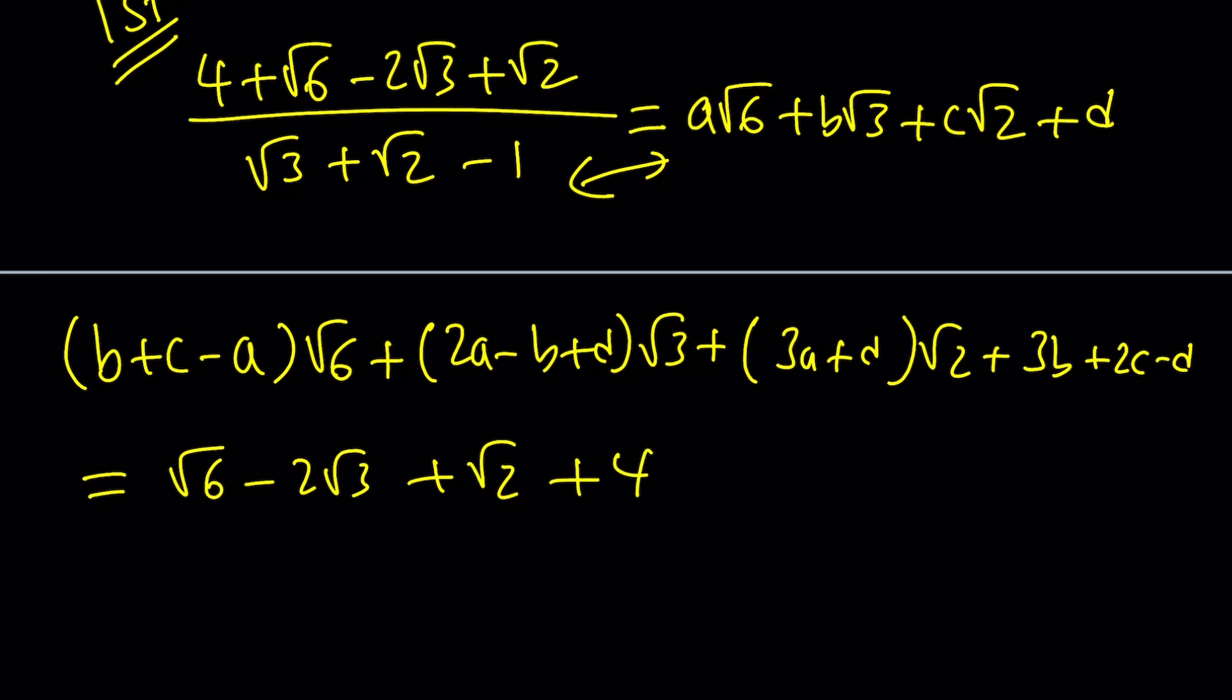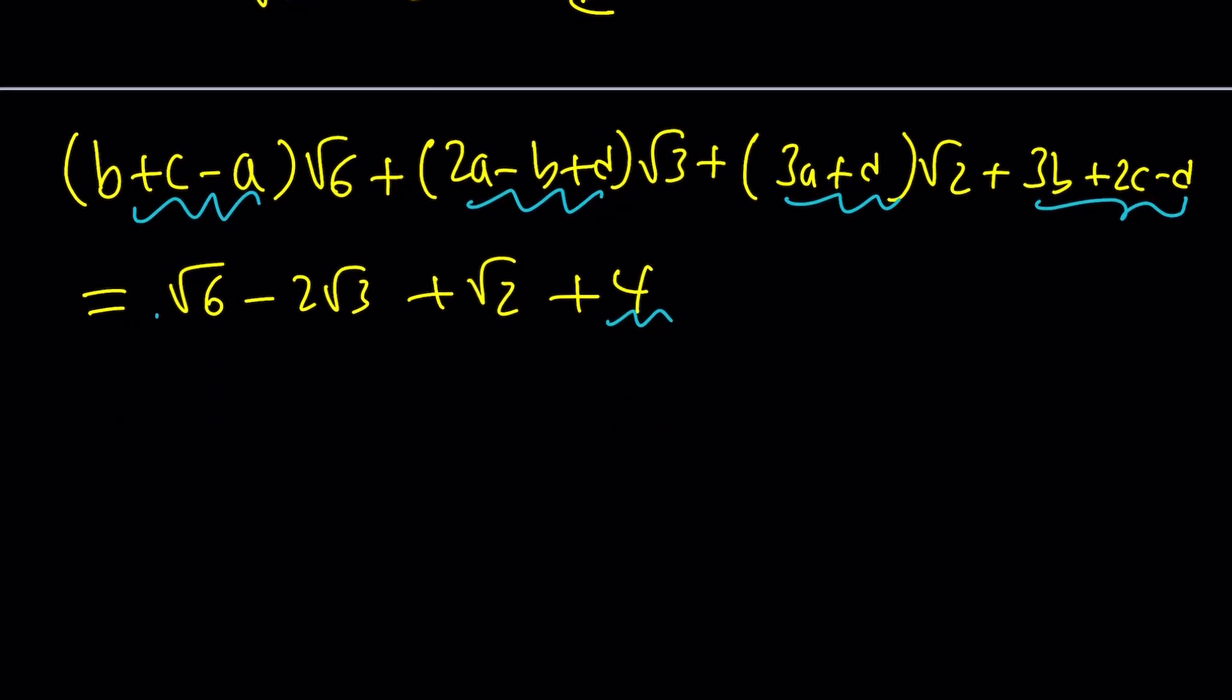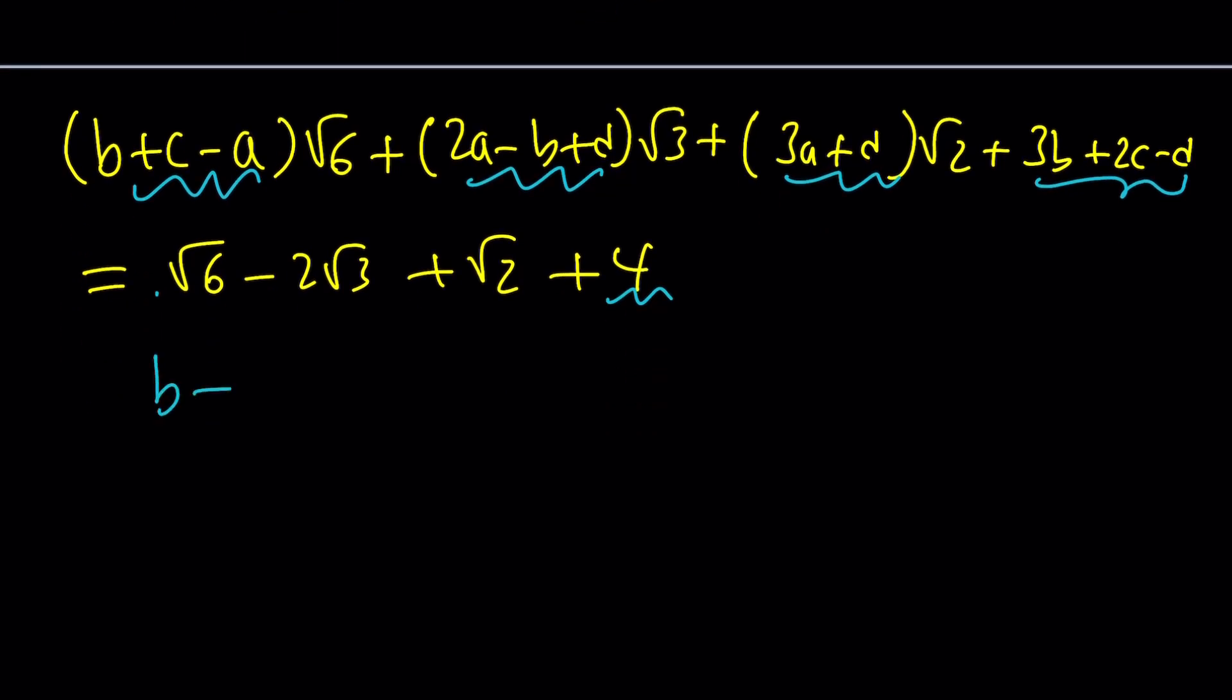And now we're going to compare the coefficient of √6 with this one, coefficient of √3, √2, and the constant term, which happens to be 4. And from there, we do get a system of equations with four variables that looks like this: B+C-A=1, 2A-B+D=-2, 3A+D=1, 3B+2C-D=4.